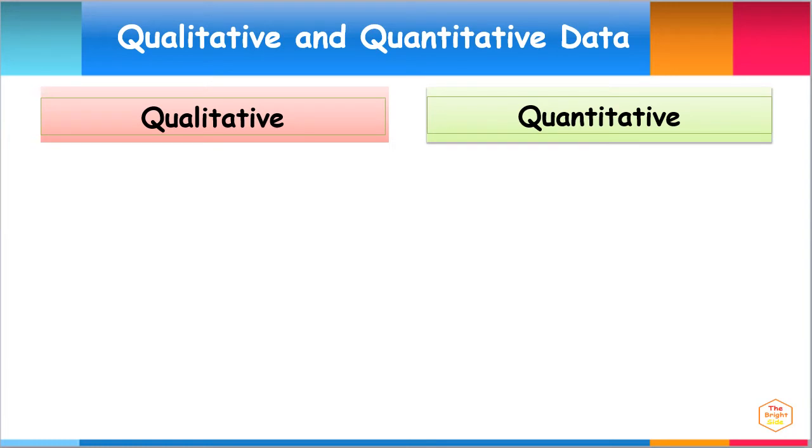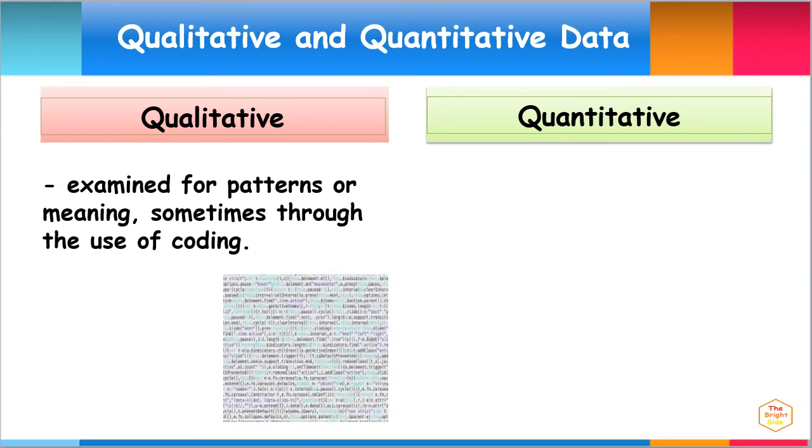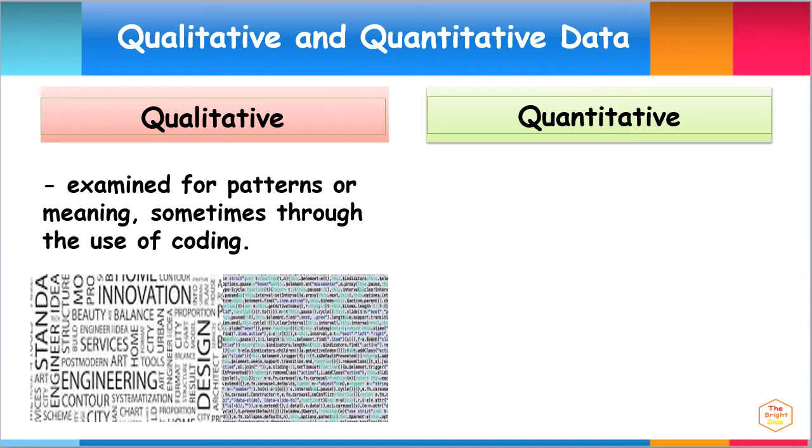Qualitative data can be examined for patterns or meaning, sometimes through the use of coding. Coding allows the researcher to categorize qualitative data to identify themes that correspond with the research questions and to perform quantitative analysis.